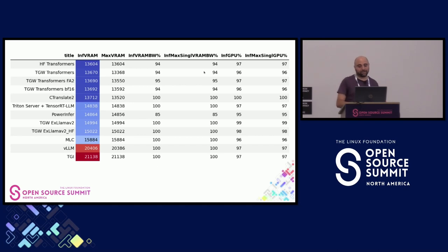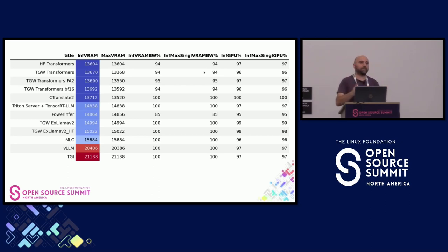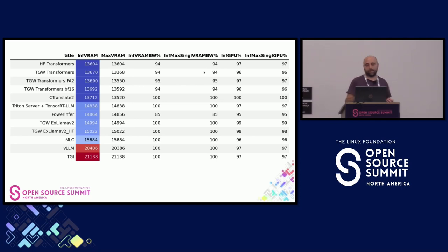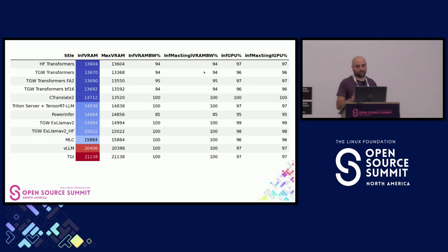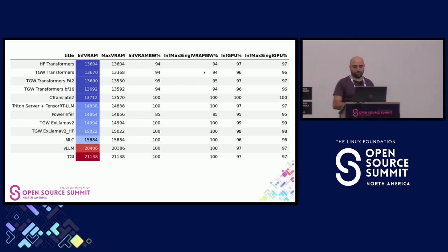Another interesting metric is VRAM bandwidth while inferencing. What we see is that all executors are bottlenecked by VRAM speed. If you had a better memory subsystem in the GPU, you could probably get more speed from these models. The GPU compute itself is also highly utilized, but after researching, it's quite common for VRAM bandwidth to be the bottleneck rather than compute.